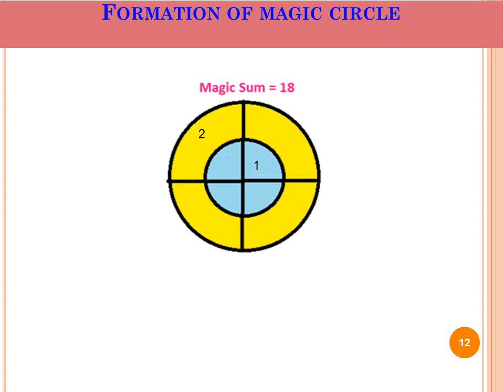The same way you can construct a 2 cross 2: 1, then 2, then 3, 4, 5, 6, 7, and then 8. So its magic sum is 18. The same way you can construct any other magic circle. Hope you enjoy it. Thank you very much.